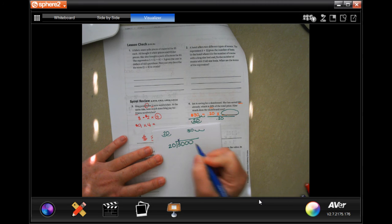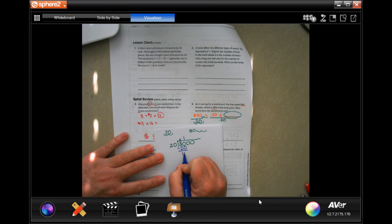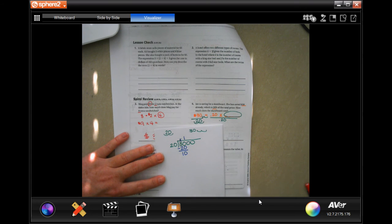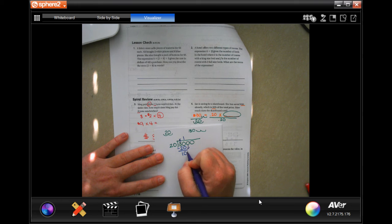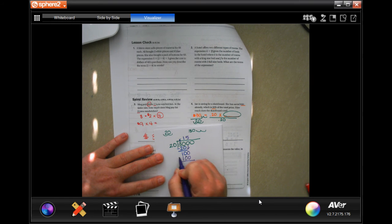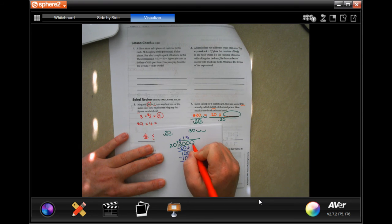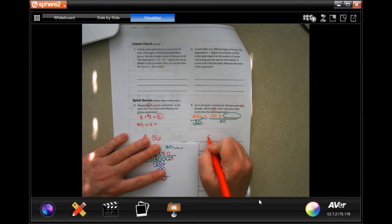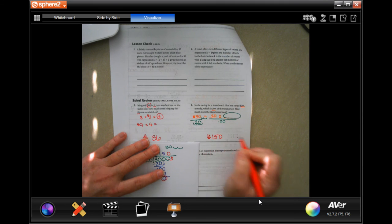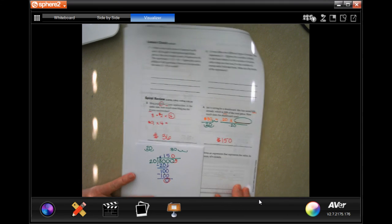So 20 is not going to go into three. 20 will go into 30 one time. One times 20 is 20. Subtract and get 10. 10 is smaller than 20. So I can bring down my other zero and 20 goes into a hundred five times. Five times 20 is 100. Subtract and get zero. Now, because I have a zero right here and because this is a zero, I can just move that zero straight up.